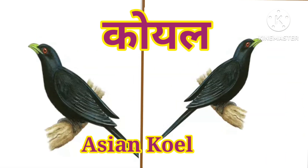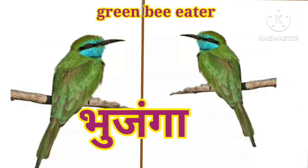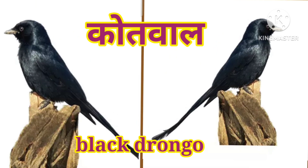Red Vented Bulbul. Coil. Asian Koel - Bhujanga. Green Bee Eater. Quatwal. Bhujang. Black Drongo.